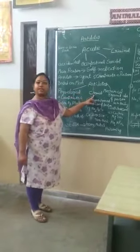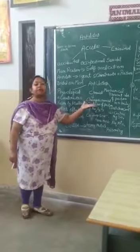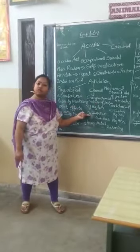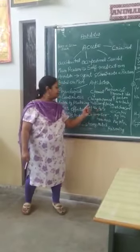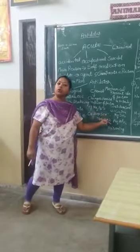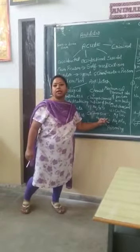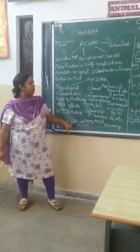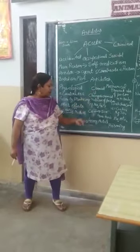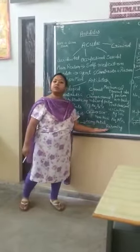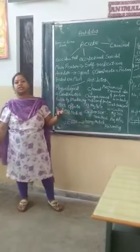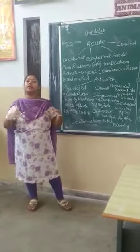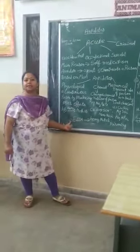Second type of antidote is chemical antidote. The name indicates that it will change the chemical nature of the poison. For example, there are cyanide ions which are toxic in nature. Sodium thiosulfate will convert these toxic cyanide ions into non-toxic thiocyanate ions. This will be studied in detail when we study the treatment of cyanide poisoning. Another example is EDTA, which is used in heavy metal poisoning. When you have ingested heavy metals in large amounts, EDTA will chelate those metals and the poison will be nullified. EDTA acts as a chelating agent.